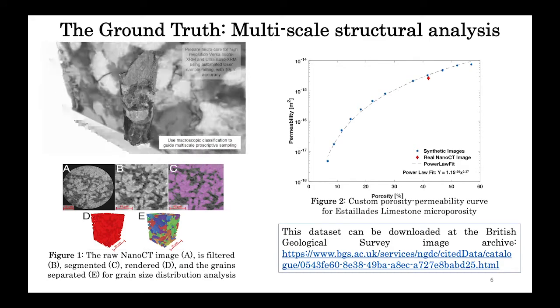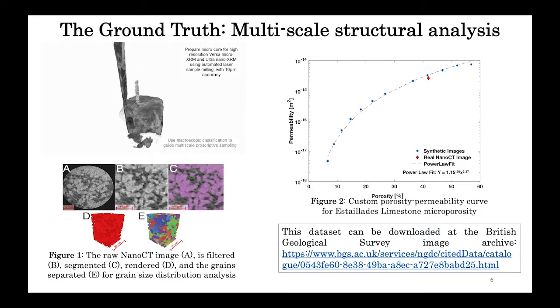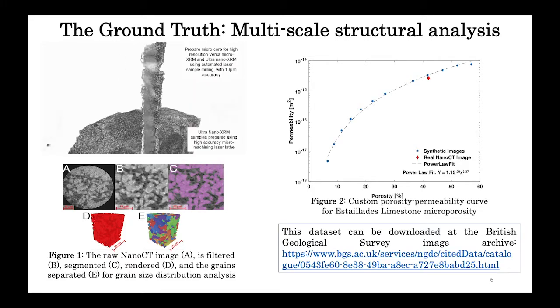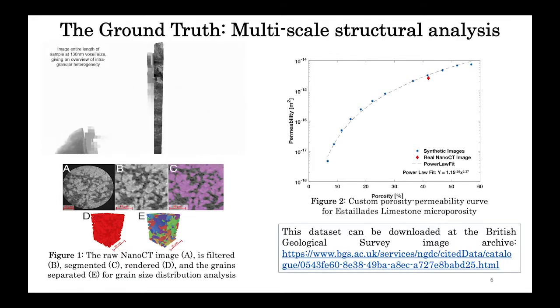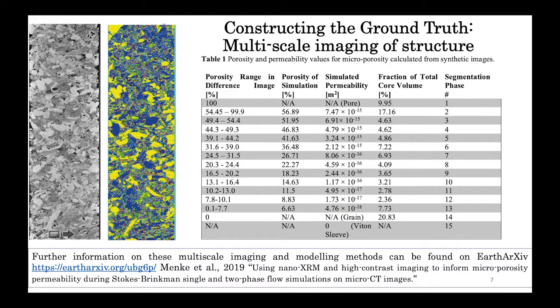We imaged a core of Estiolatus limestone in the micro-CT, and a representative subsection of microporosity was identified, cut out with a laser, which was fun, and then we imaged it in the nano-CT. The structure of the grains was extracted from the nano-CT image, and the grain size distribution was used to create a custom porosity permeability curve for Estiolatus limestone microporosity.